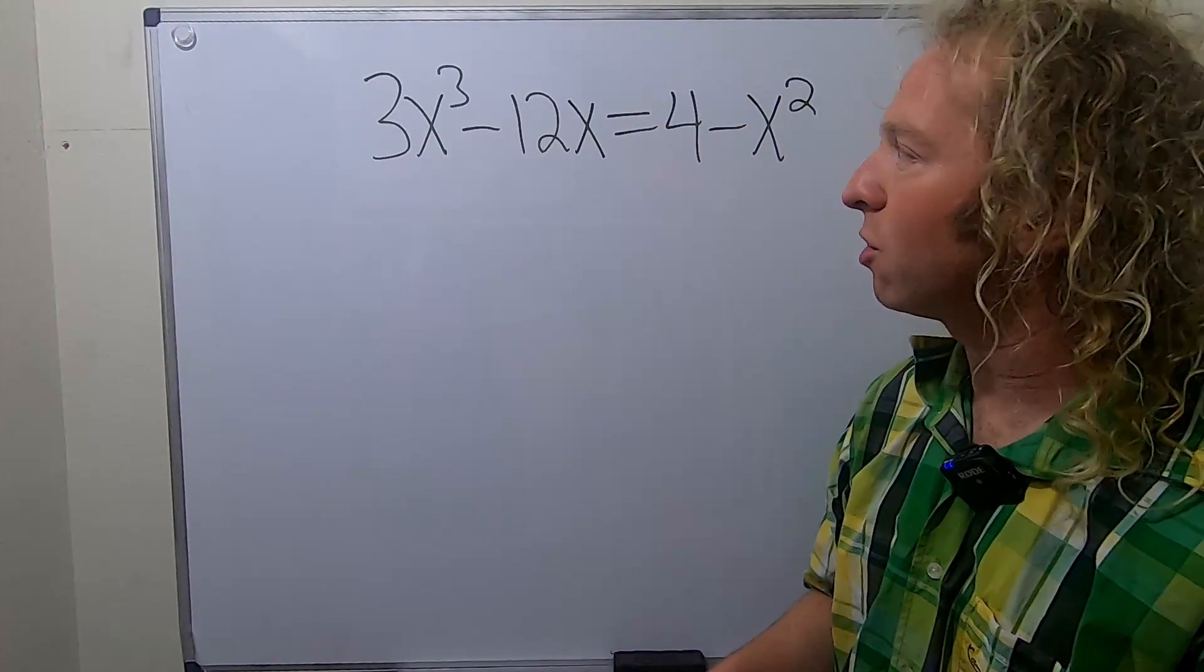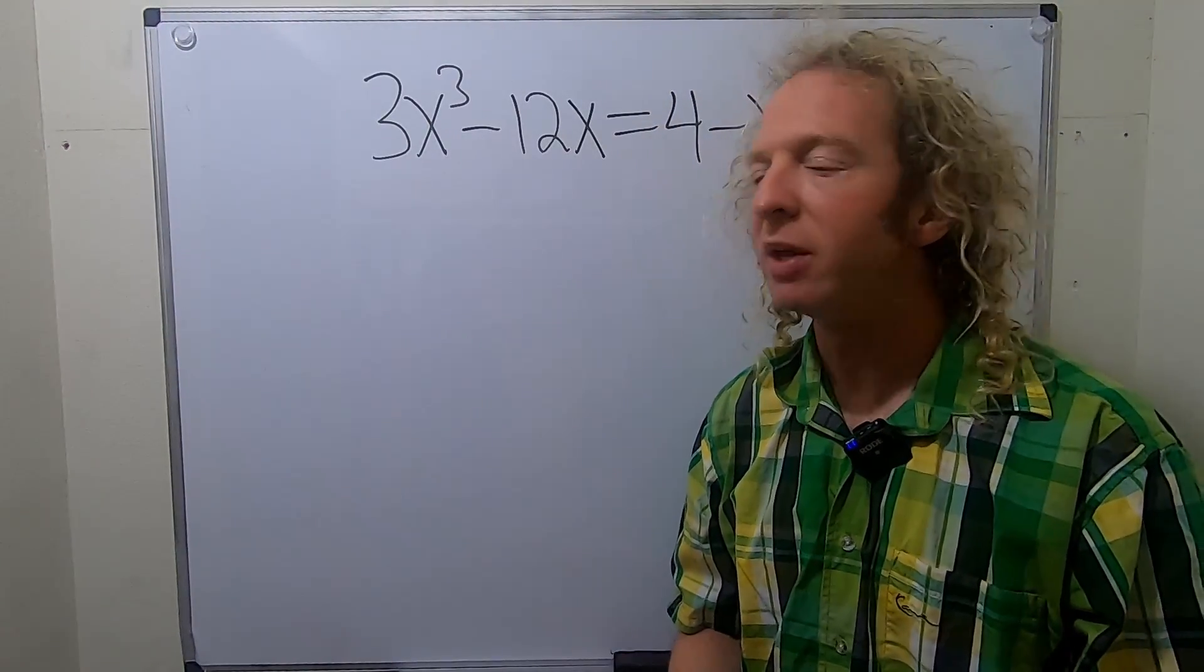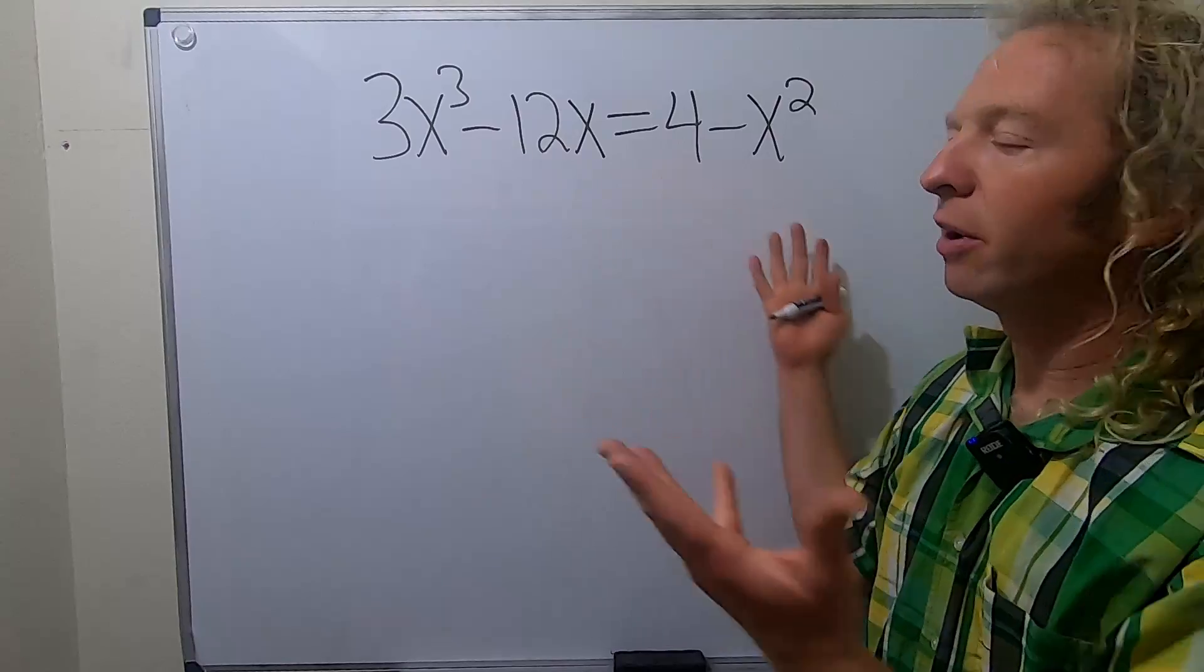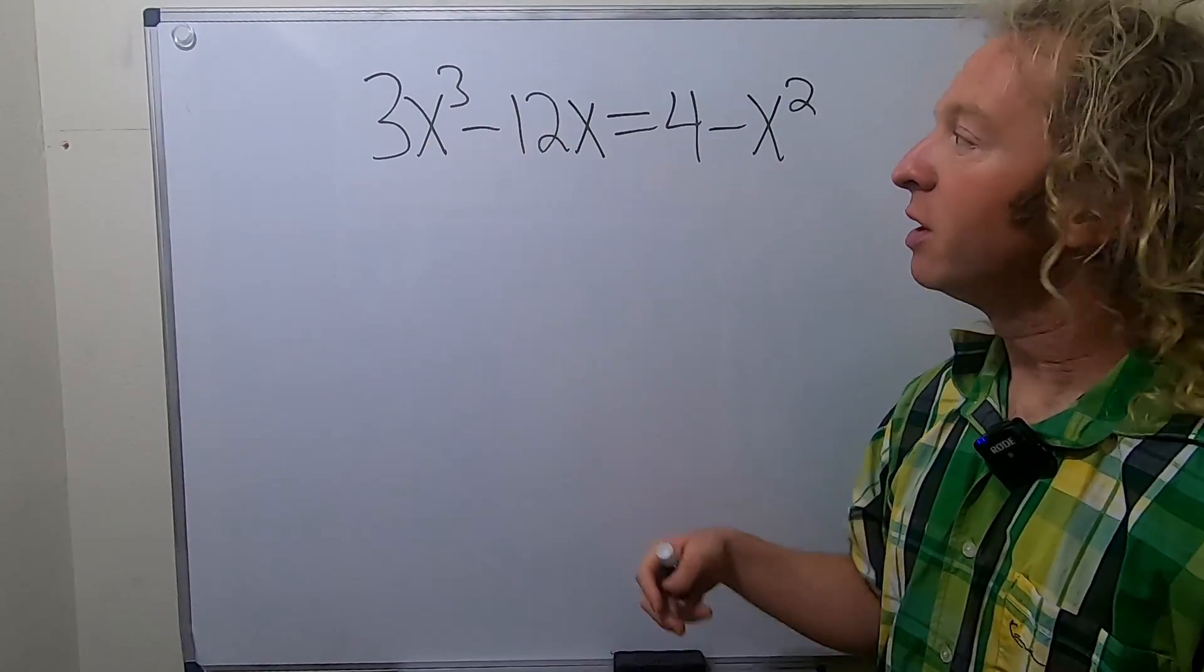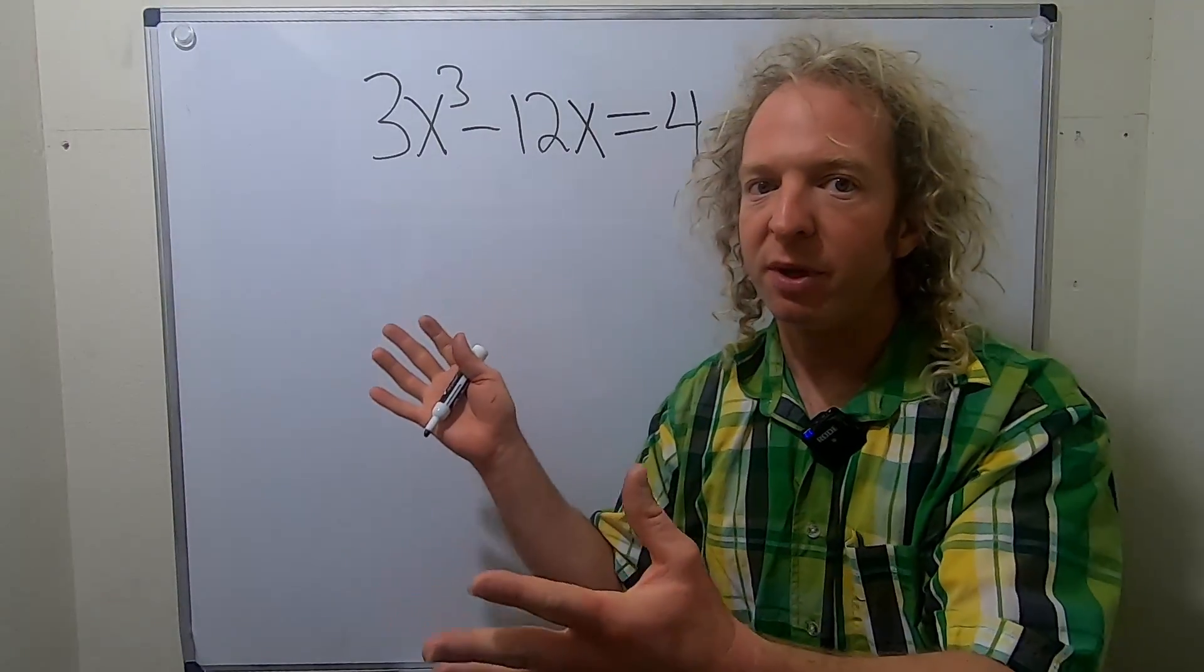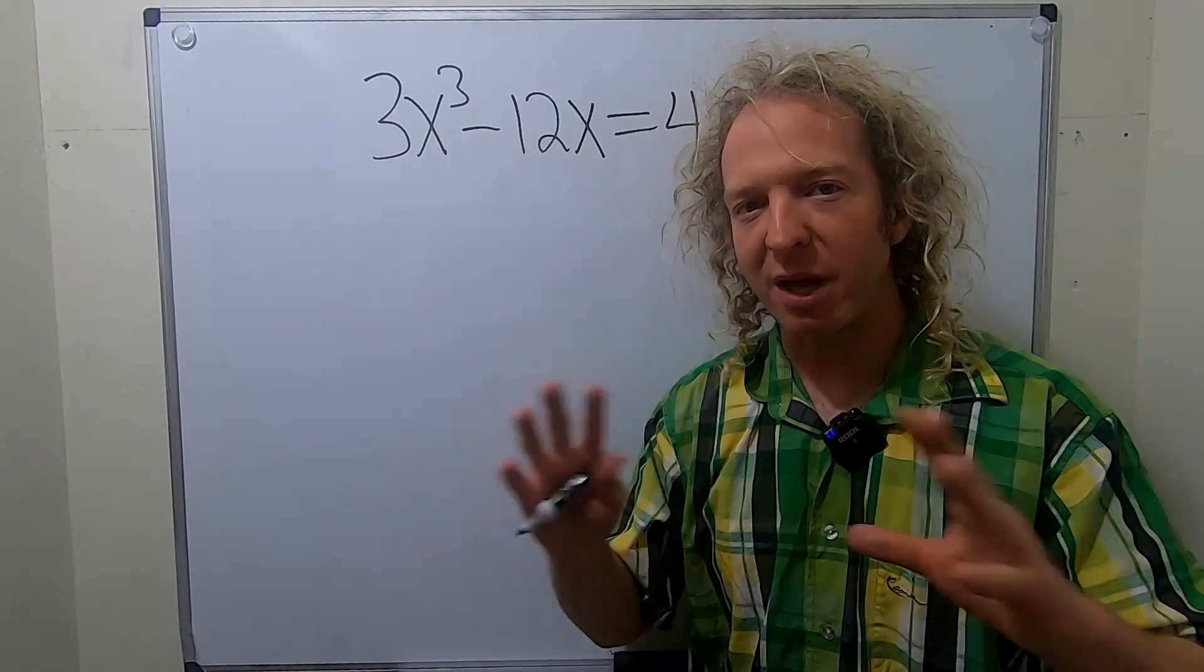Hi everyone, in this video we're going to solve what's called a polynomial equation. So this is an example of a polynomial equation. So whenever you have a polynomial equation, the first thing you want to do is set it equal to 0.